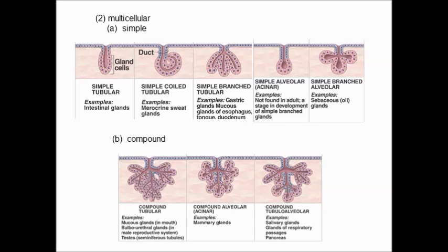The simplest of these is simply an invagination of the epithelium, where the gland material is down in a tubular-like array. There are many families of intestinal glands in the stomach and intestines that have this type of organization. Some of them are curved so that there are more secretory cells, which increases the amount of cells producing the product. The next level is to have several of these loops of epithelium cells producing the product.